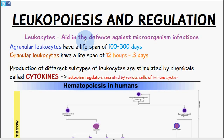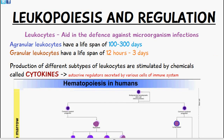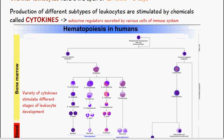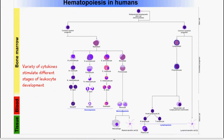The production of different subtypes of leukocytes is stimulated by chemicals called cytokines. Cytokines are autocrine regulators which are secreted by various cells of the immune system. The cytokine is responsible for helping to differentiate the different types of leukocytes.